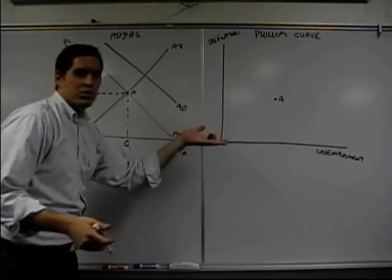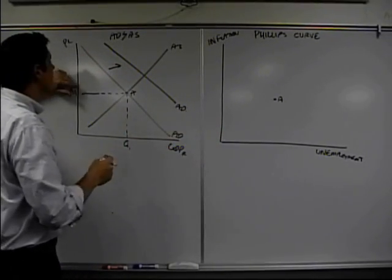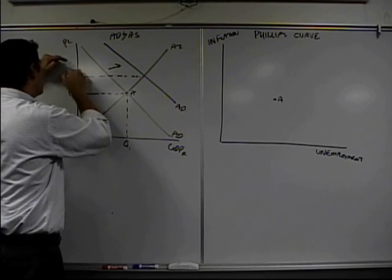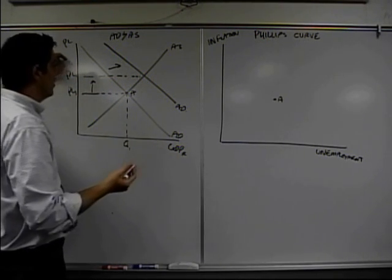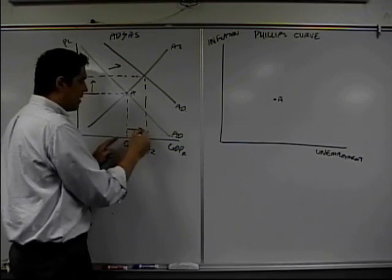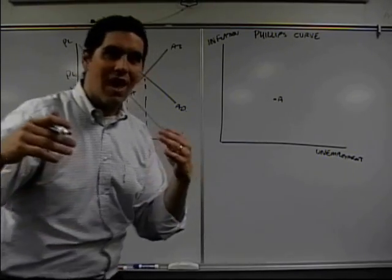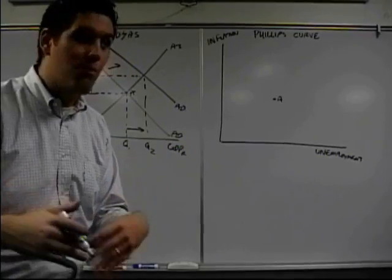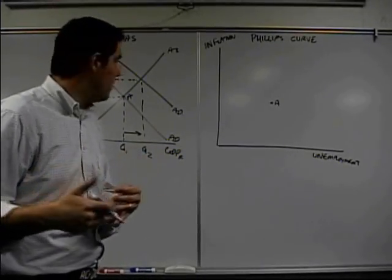When aggregate demand shifts to arrive, let's find out what happens to inflation. Well, price level increases. So, when price level goes up, it means we have more inflation. At the same time, the quantity increases. More quantity means that we have lower unemployment. More people working. Low unemployment.